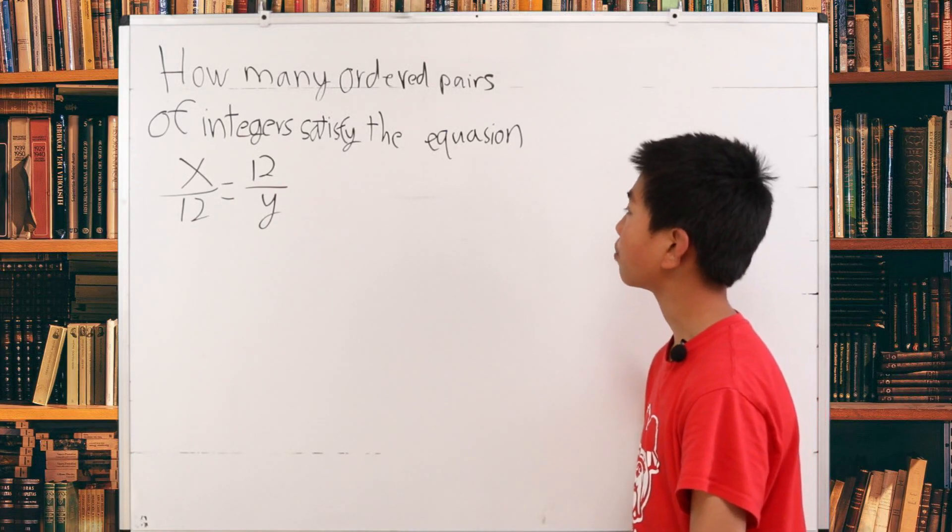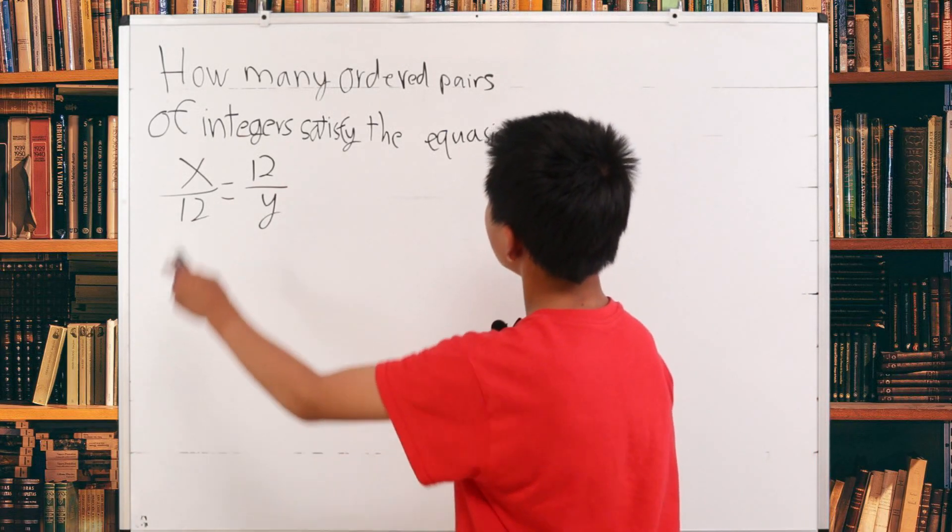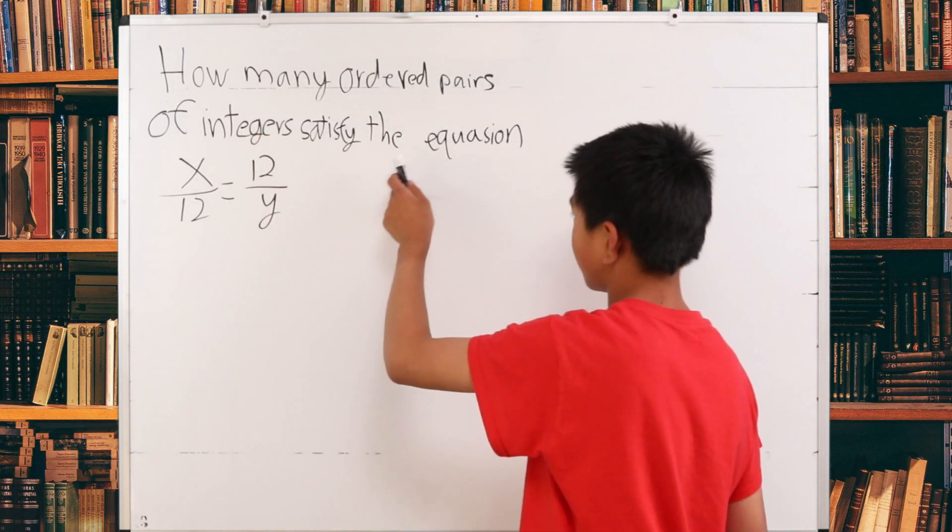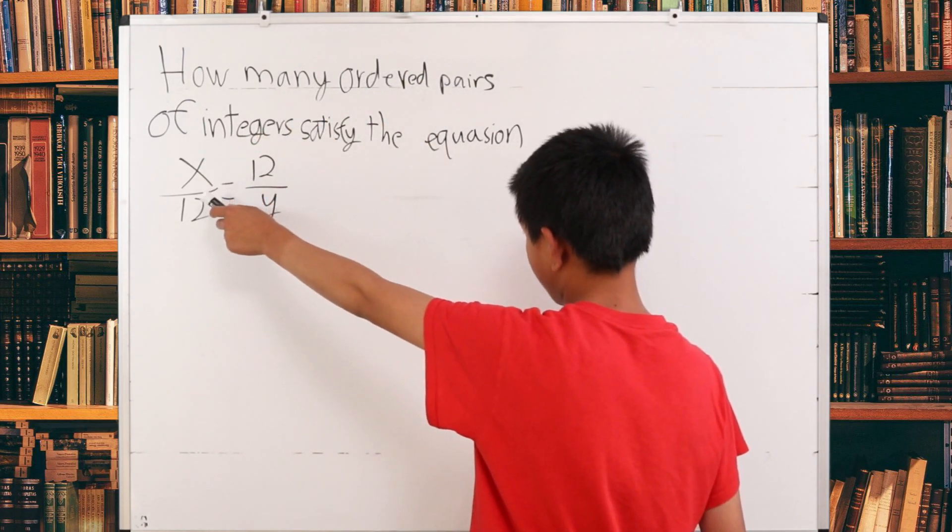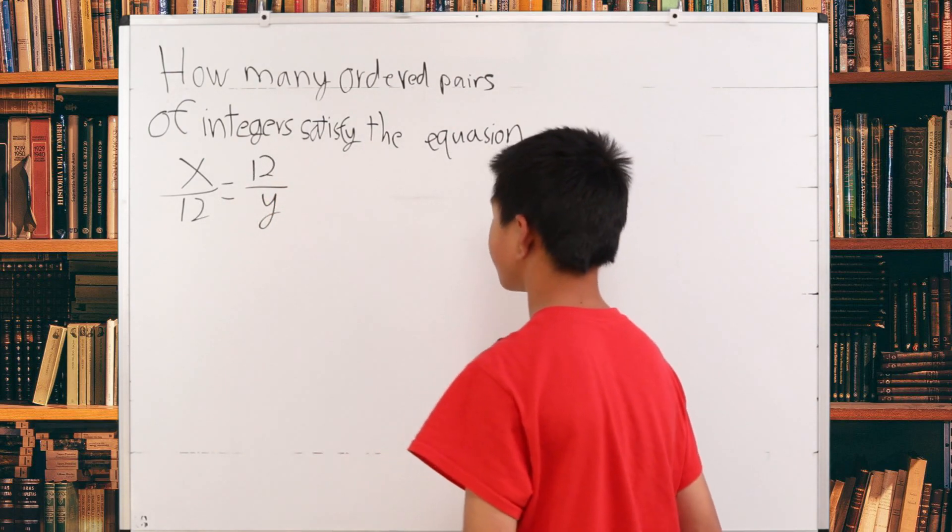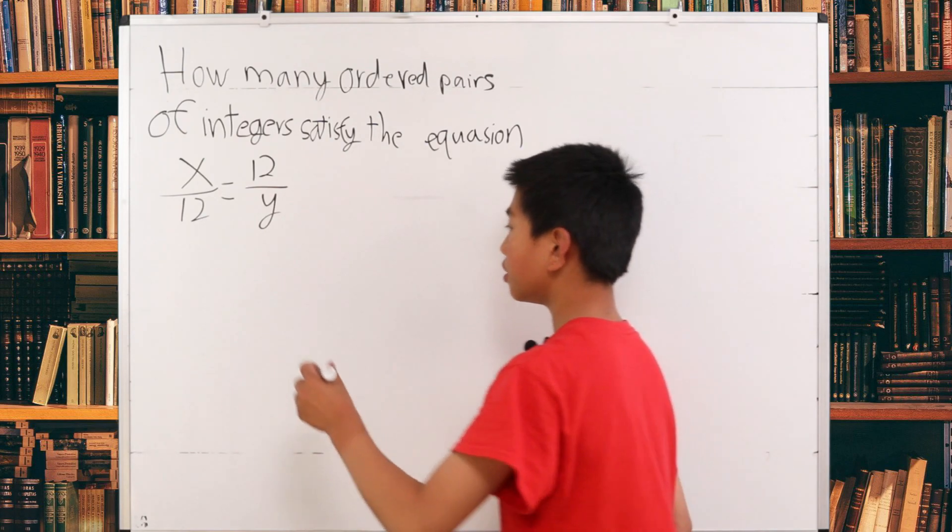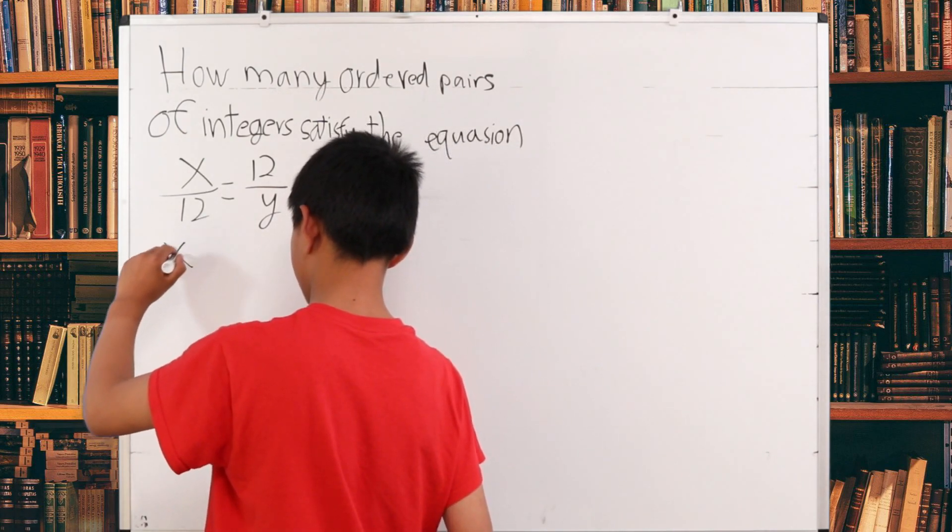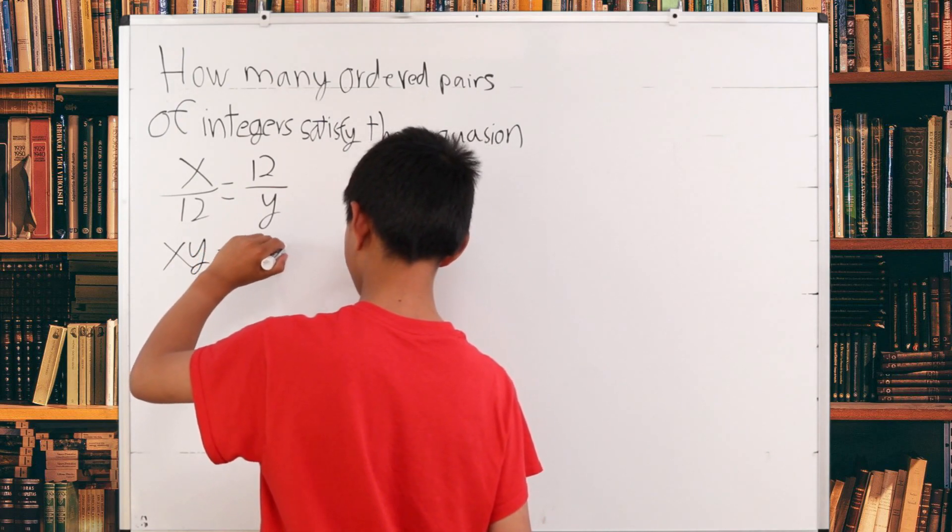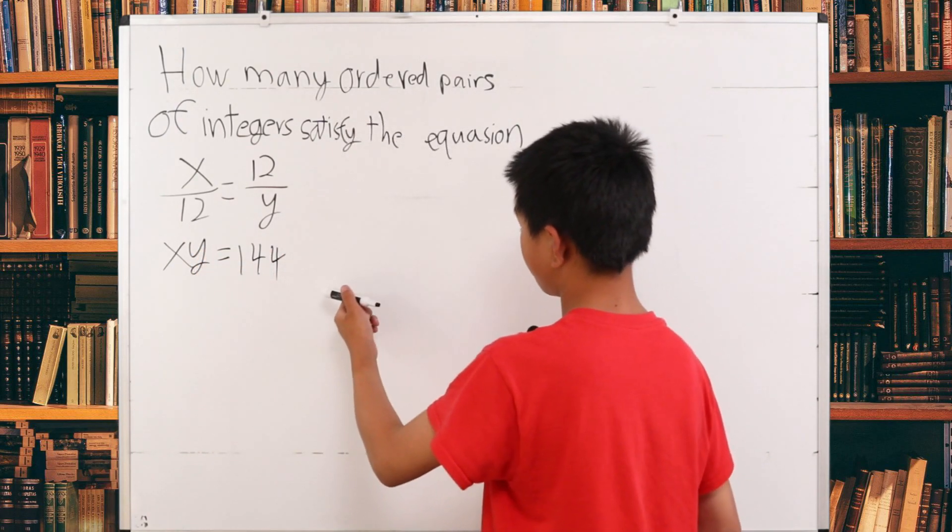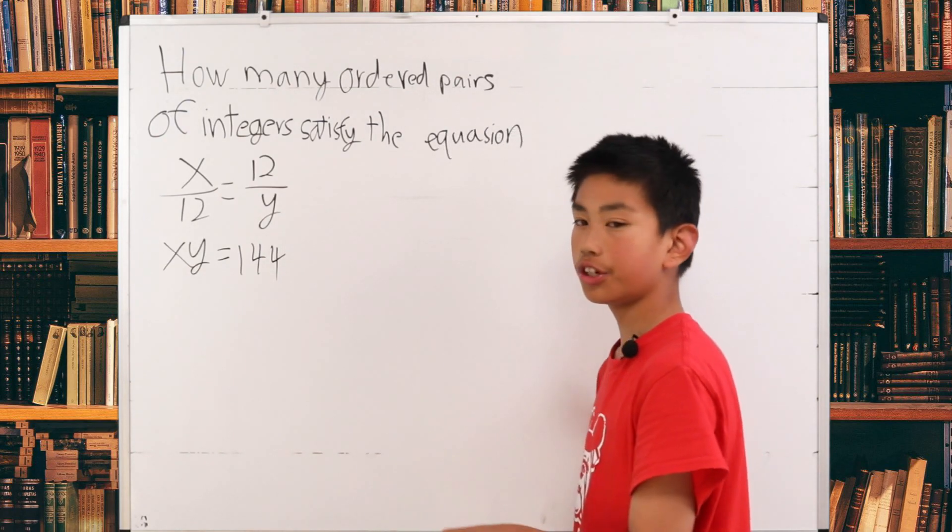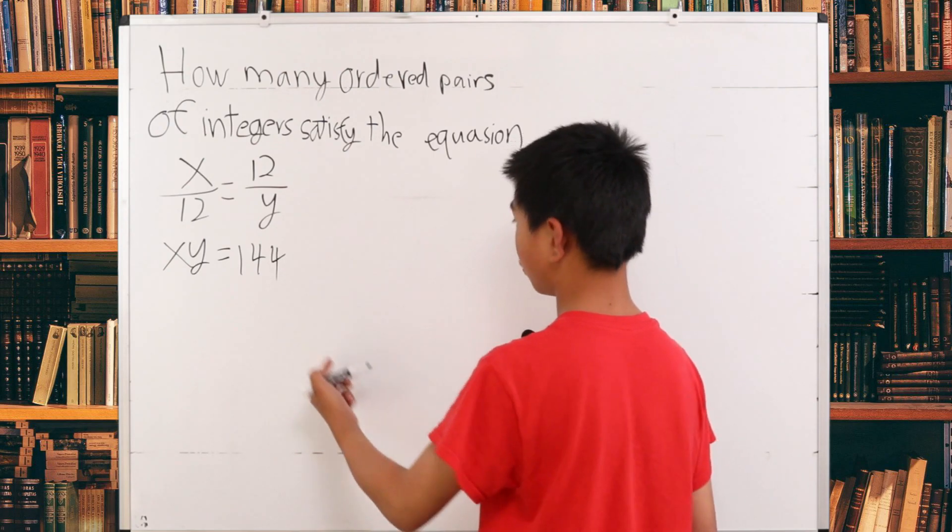We have another problem where we want to find how many ordered pairs of integers satisfy the equation x divided by 12 is equal to 12 divided by y. The first thing we need to do is notice that x times y is equal to 144. So what this question is really asking is how many ordered pairs of x and y as integers multiply to 144.